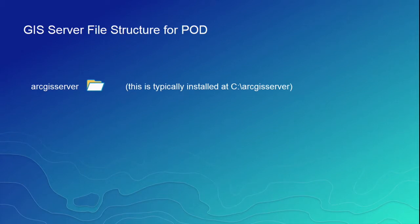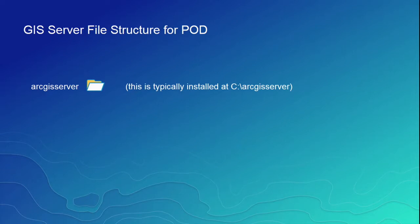So I talked about earlier the folder structure and the databases and all that stuff sitting behind the scenes. This is what the folder structure looks like, so you'll know exactly what you need — or how little you need — to actually run any of these. When you install ArcGIS Server, it installs an ArcGIS Server folder, typically at C:\ArcGIS Server. Inside the defense mapping install, we have an MCS POD folder with a set of basic folders underneath it. If you copy it from the install directory into the ArcGIS directory, you have your framework or backbone for the entire POD application.